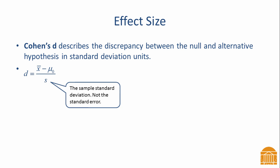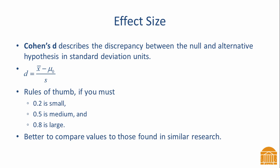Cohen's d is in the standard deviation units. For example, a value of 1.5 indicates that the sample mean deviates from the mean under the null by one and a half standard deviations. Cohen provided rules of thumb for interpreting his effect size. 0.2 is small, 0.5 is medium, and 0.8 is large.